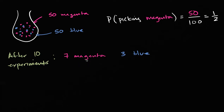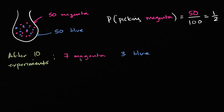So is it strange that after 10 experiments you haven't picked out exactly half being magenta — you've picked out seven magenta and three blue? Well no, this is definitely a reasonable thing. If the true probability of picking out a magenta is one half, it's definitely possible you could still pick out seven magenta. This isn't a lot of experiments. There's enough variation that, especially with only 10 experiments, you're not definitely going to get exactly one half. It's completely reasonable to have seven magenta instead of five.